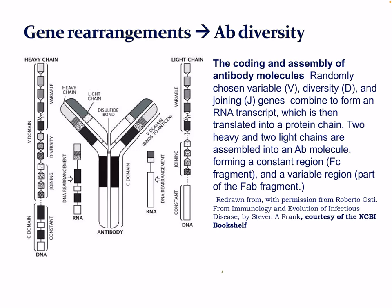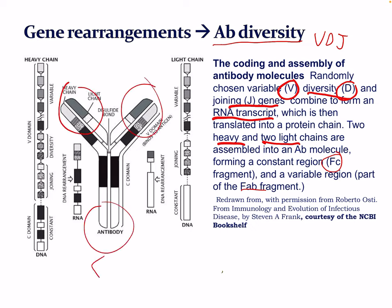Gene rearrangement results in antibody diversity. The coding and assembly of antibody molecules involves randomly chosen variable (V), diversity (D), and joining (J) gene segments. These combine to form an RNA transcript, which then translates into a protein chain. Two heavy chains and two light chains assemble into an antibody molecule, forming a constant Fc region fragment and a variable Fab fragment.